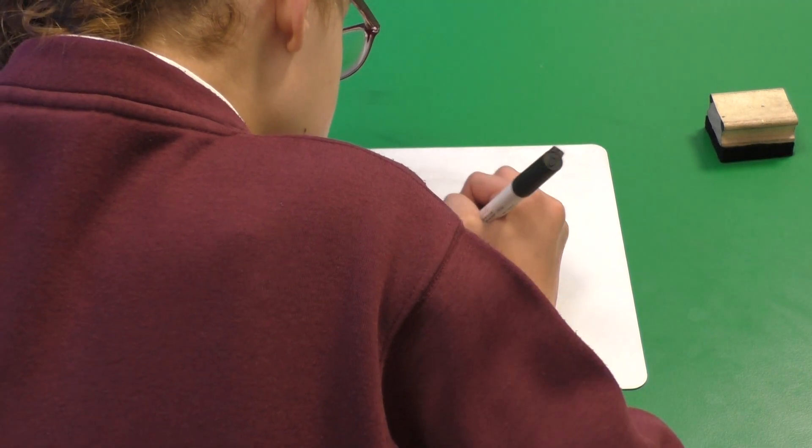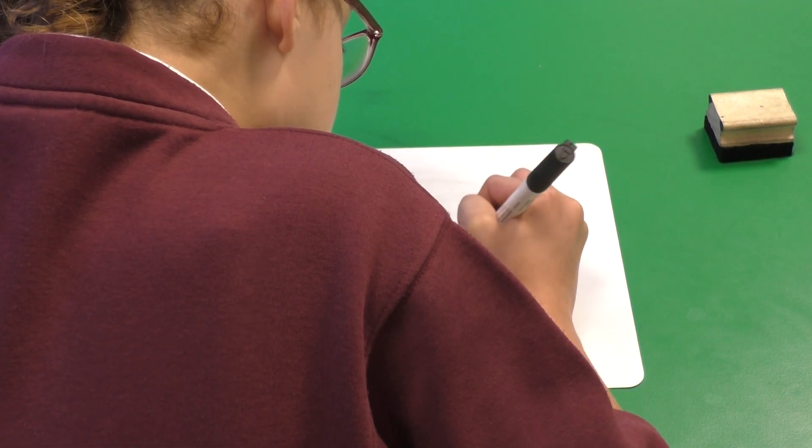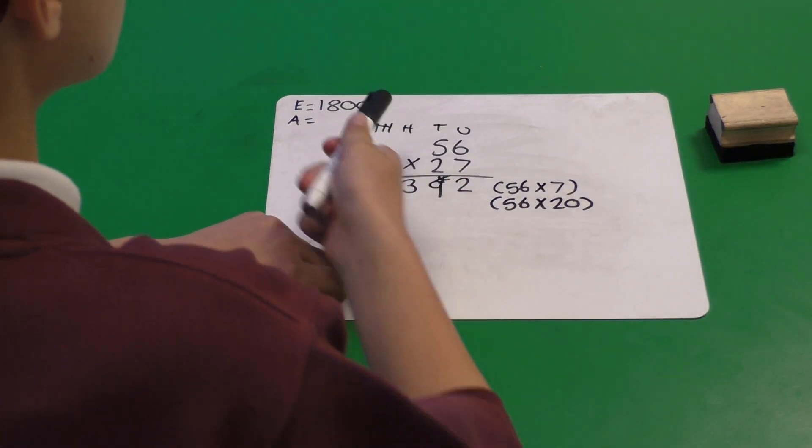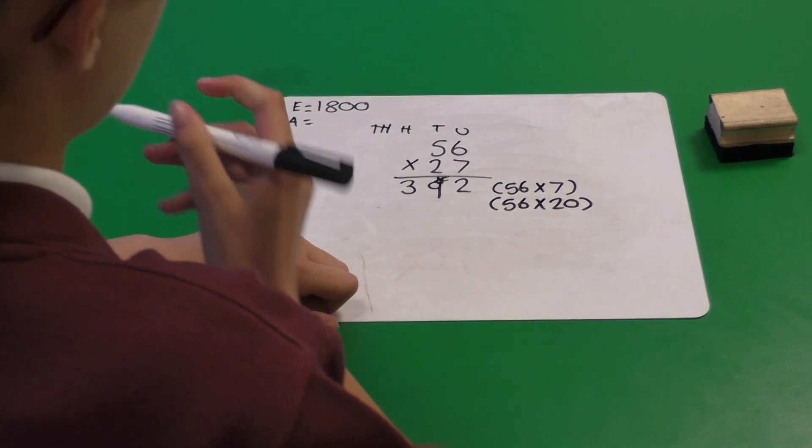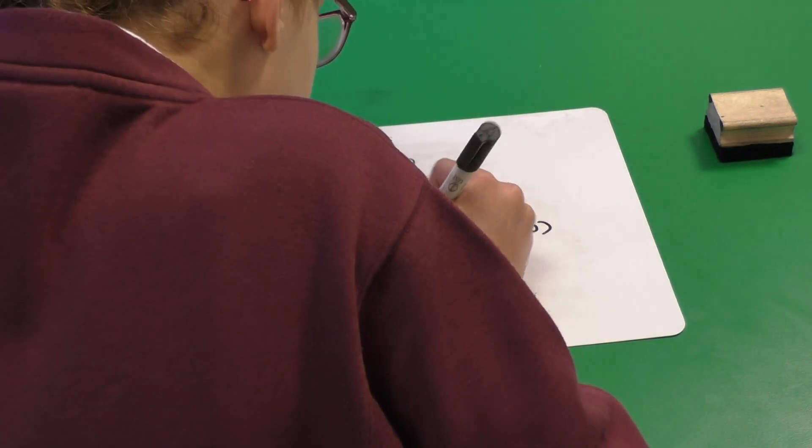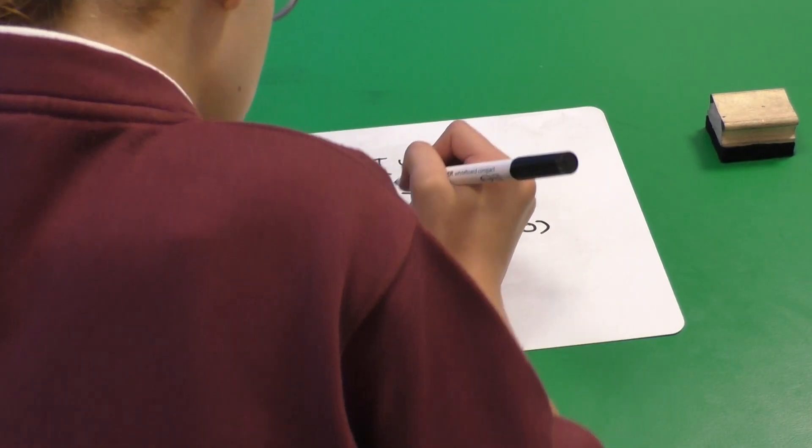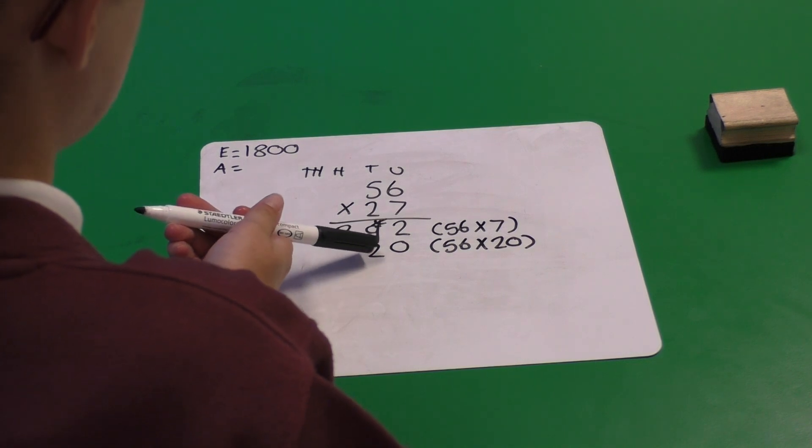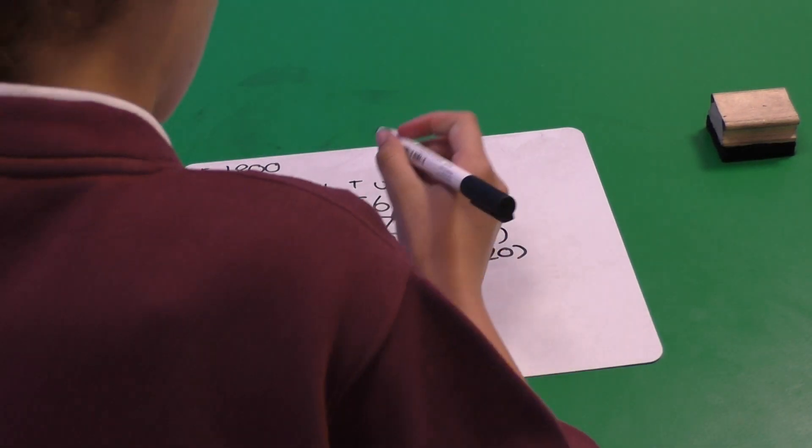The next calculation we're going to do is 56 multiplied by 20. So 6 multiplied by 20 is 120. And again, we've got that exchanged one from the tens into the hundreds column.